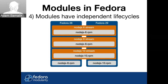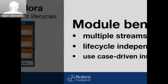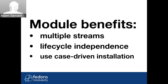What happens if there is a new Fedora release? Some streams will continue living throughout the lifecycles of the underlying operating system. So if you're a developer, you can always choose the newest one. If you're a sysadmin or have Fedora on a server, you can basically keep the same stream you had before. They have independent lifecycles. This is just a summary of module benefits: multiple streams so you can choose the version, lifecycle independence so you can keep the version.